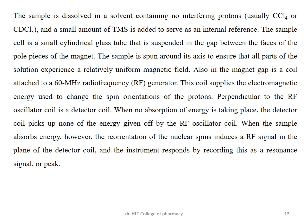The sample is filled in a glass tube suspended in the gap between the two poles of the magnet. The sample is spun on its axis to ensure all parts of the solution experience a uniform magnetic field. A coil attached to a 60 MHz radio frequency generator supplies electromagnetic energy. When the sample absorbs energy, reorientation of the nuclear spin takes place, inducing a radio frequency signal detected by the detector, producing peaks or signals.